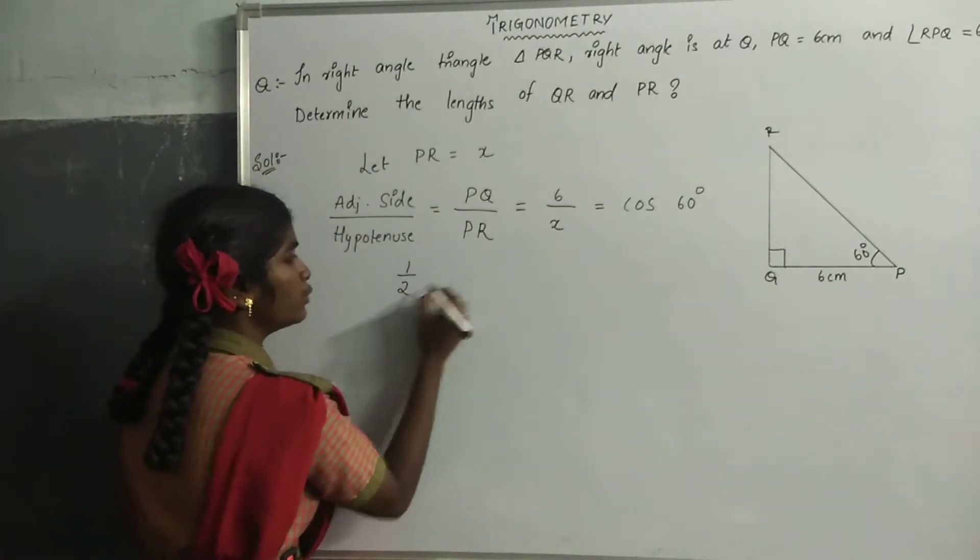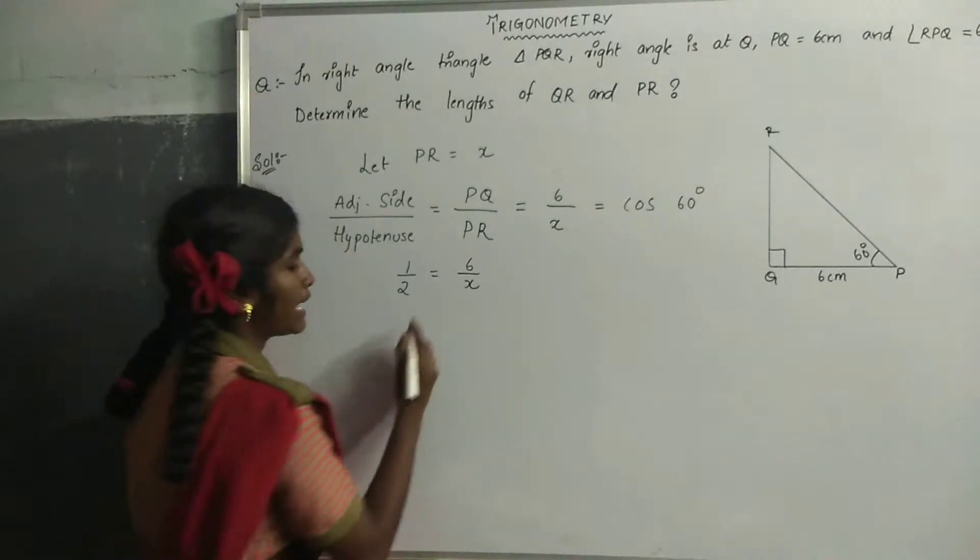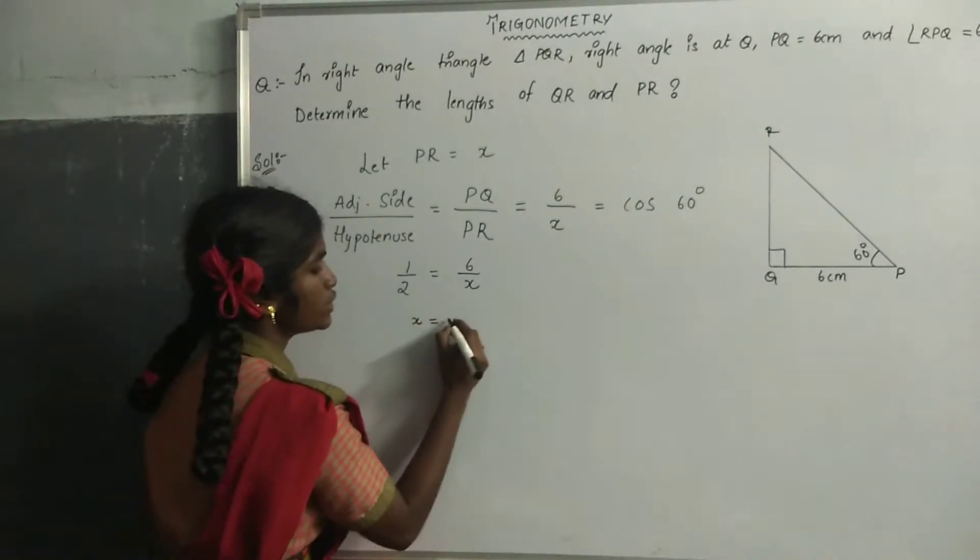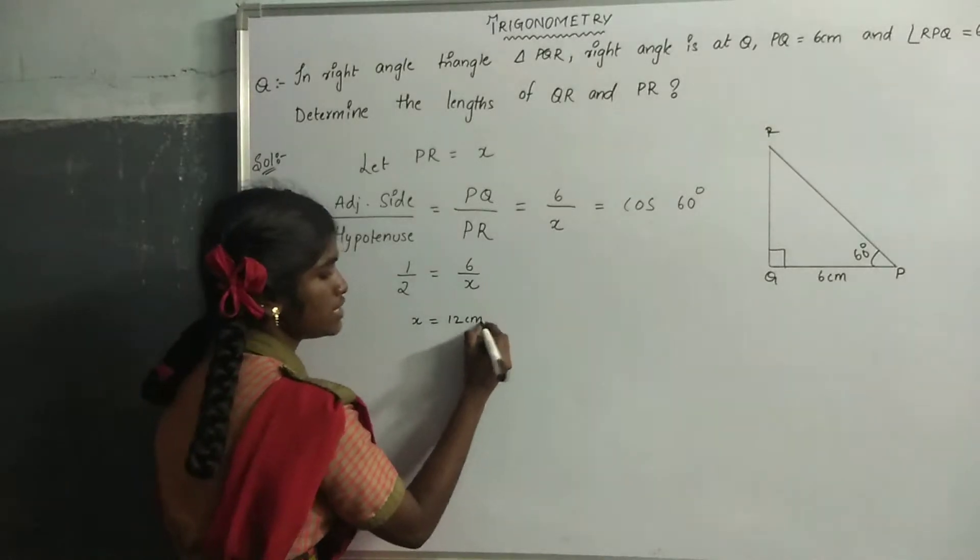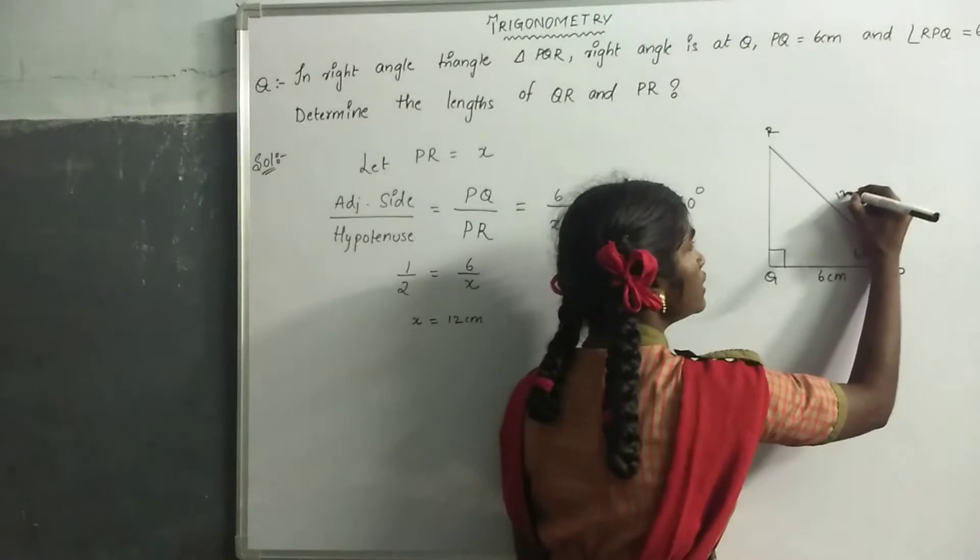1 by 2 equals 6 by X. By cross multiplying, X equals 12 cm. Therefore, PR equals 12 cm.